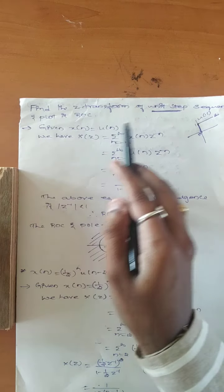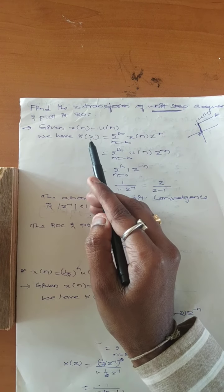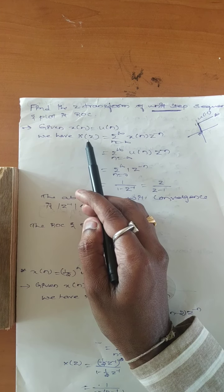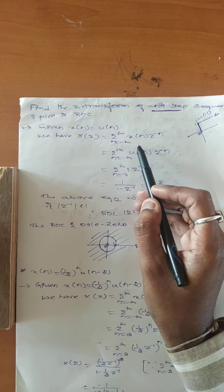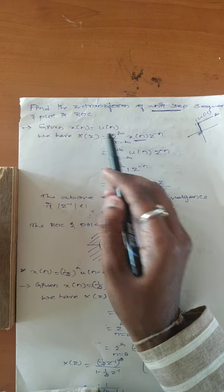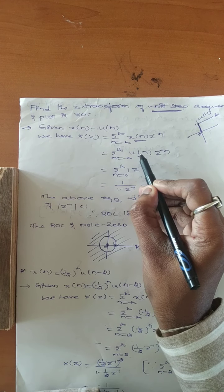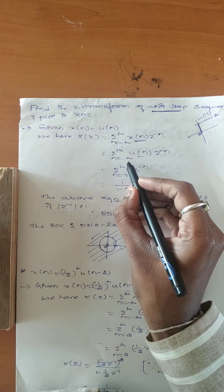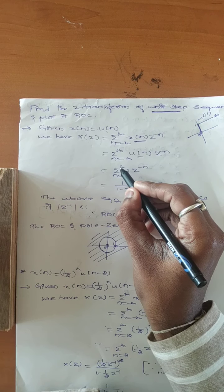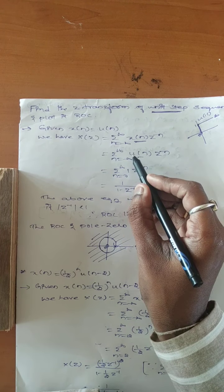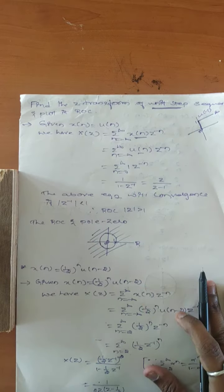Given is unit step sequence: x(n) = u(n). We have the formula for Z transform: X(z) = summation from minus infinity to infinity of x(n) times z to the power of minus n. In place of x(n) we write u(n). The range changes from 0 to infinity, since u(n)'s amplitude is 1, giving us the summation of z to the power of minus n.